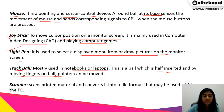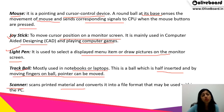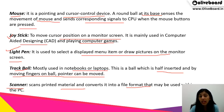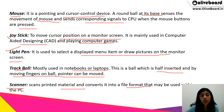Next is the scanner. By using a scanner, we can scan print material and convert it into a file format that can be used on a PC. The documents that we have and want to convert into a digital form — that's where we use the scanner.